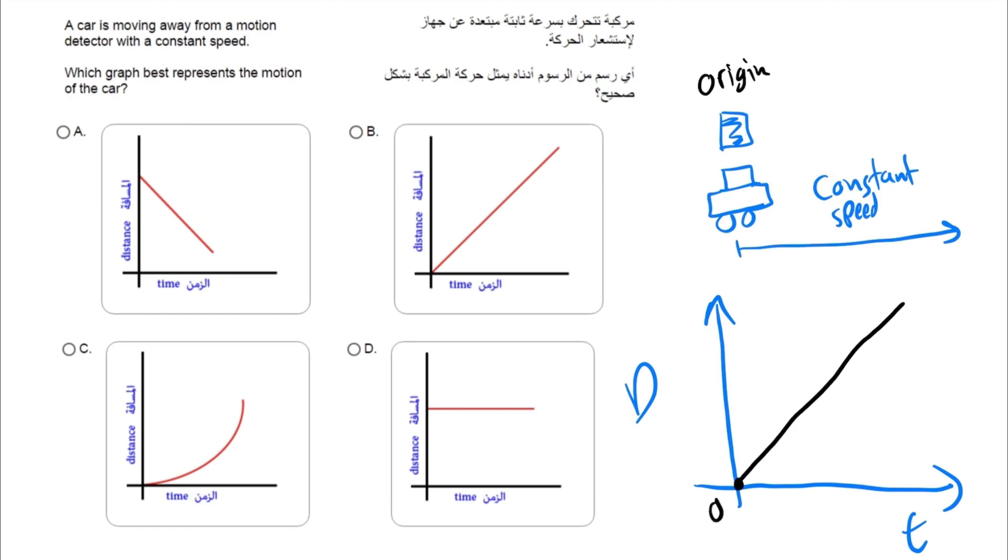Since the slope of this line is considered to be the speed, if I want to represent the slope, this is the run, this is the rise. The slope equals the speed. So if we have a constant speed, it means the slope should be in the form of a straight line like this. So the distance-time graph should have a straight line in order to represent the constant speed.